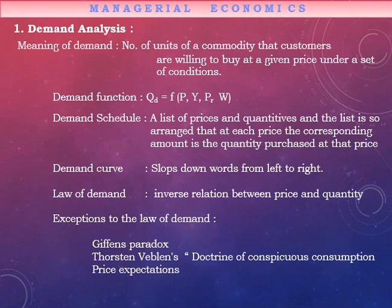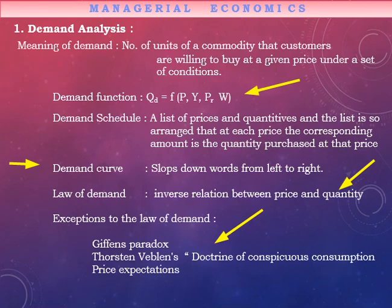The law of demand says that, other factors remaining constant, if the price of a good increases, the quantity demanded falls. There is an inverse relationship, which is why the demand curve slopes downward. The functional form of demand shows that quantity demanded is a function of own price, price of other goods, income, and taste preferences. There are certain exceptions to the law of demand — these are called the Giffen paradox, the Veblen effect, and the Snob effect.